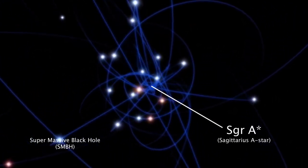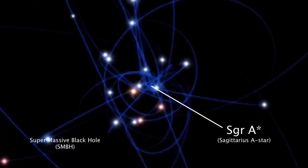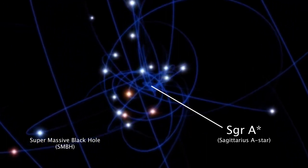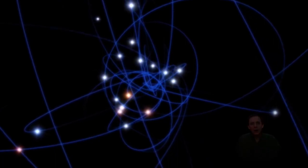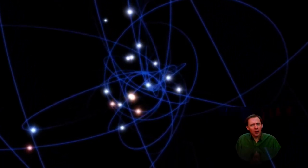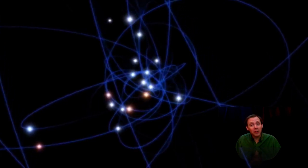Perhaps it wouldn't surprise you to learn that there are likely supermassive black holes at the center of every major galaxy. So now you know how and where a black hole can form. Let's talk a little bit about some of their amazing properties in the next lesson.